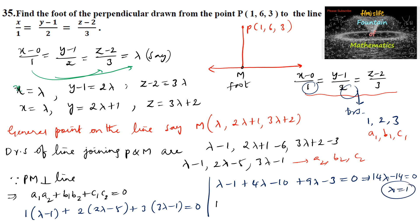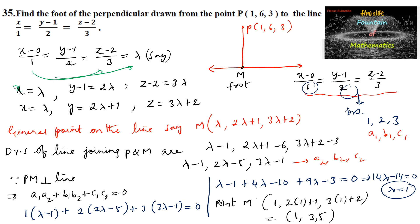So the foot of the perpendicular, point M, is: (λ, 2λ+1, 3λ+2) = (1, 2·1+1, 3·1+2) = (1, 3, 5). So the foot of the perpendicular is (1, 3, 5).